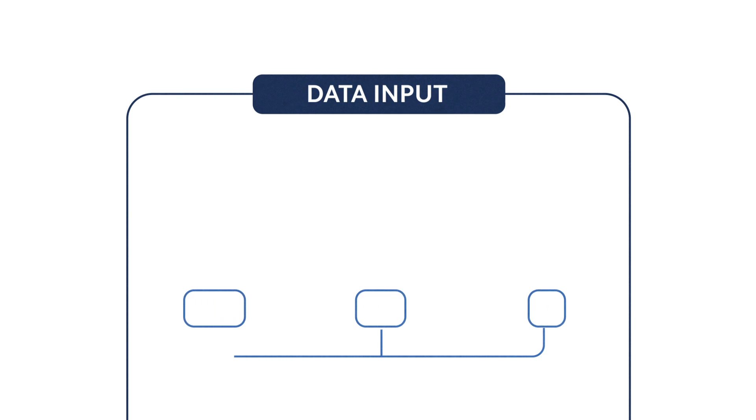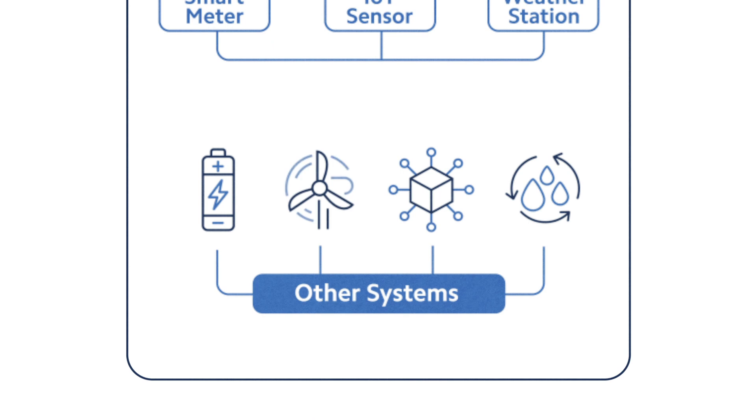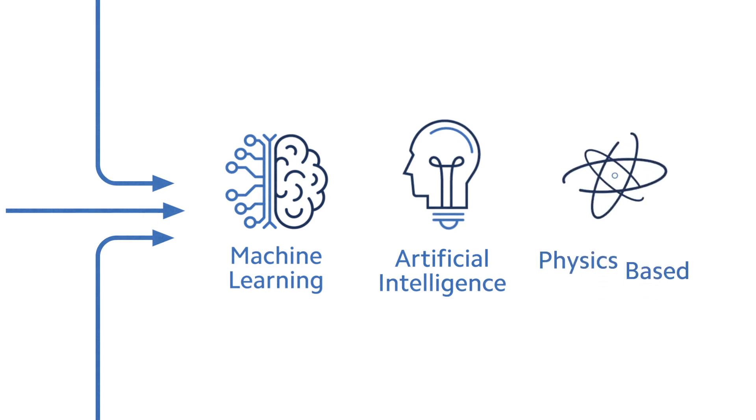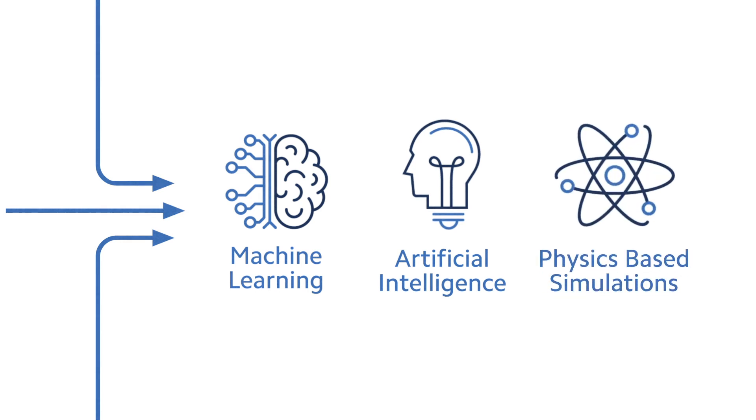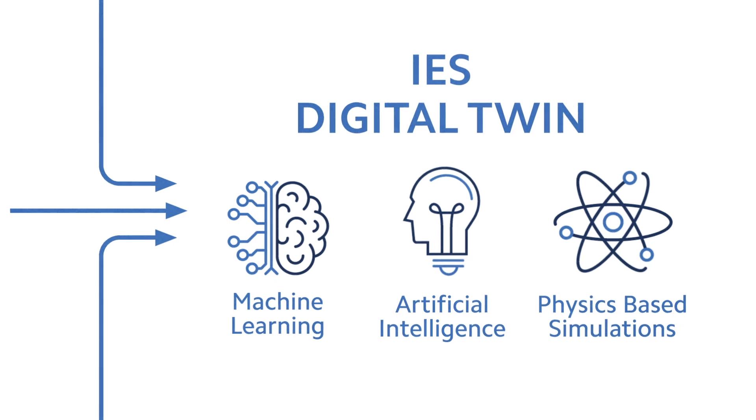IES's unique thermal simulation software can predict the performance of buildings, taking into account many variables. Real-time analysis using machine learning and AI is then linked to this physics-enabled simulation. The end result is a digital twin that responds exactly as your building would in the real world.